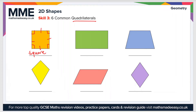Moving on, we have a rectangle, sometimes called an oblong. The main features of a rectangle are that there are two pairs of equal sides and all internal angles are 90 degrees. So a square is actually a type of rectangle — it's just a regular rectangle.